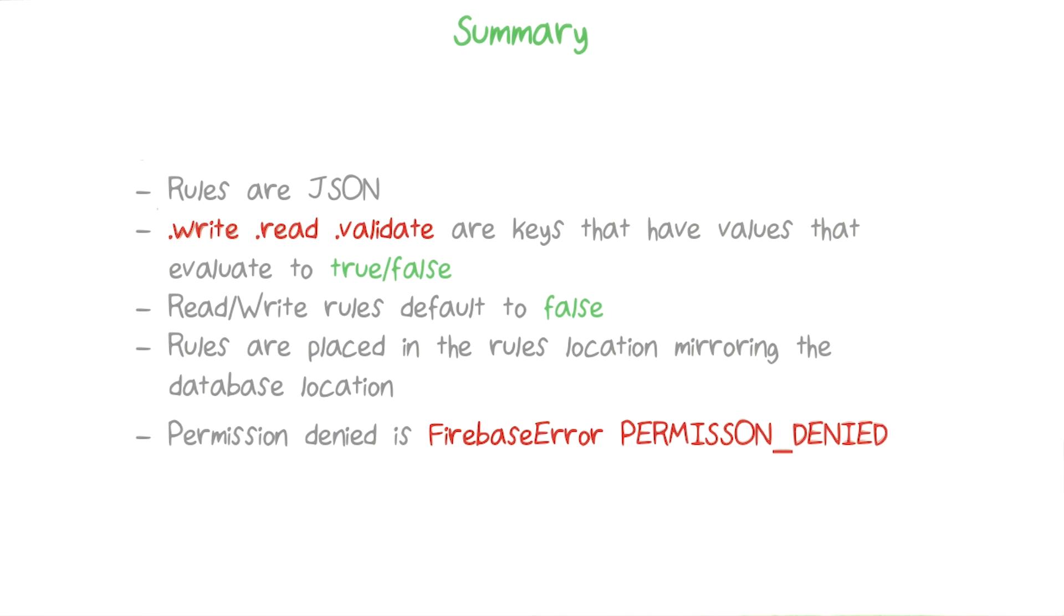And they will always have values that evaluate to either true or false. If there is no read or write rule at a location or its parent locations, then it will default to false. When you're writing a permission rule, you'll place it in the rules location that mirrors the database location that you're interested in.